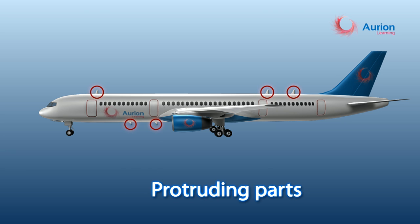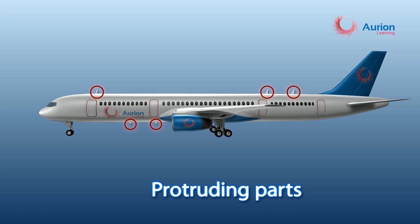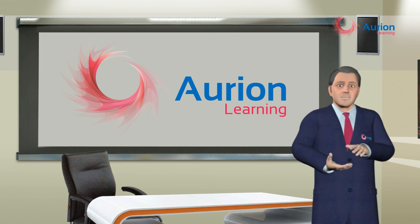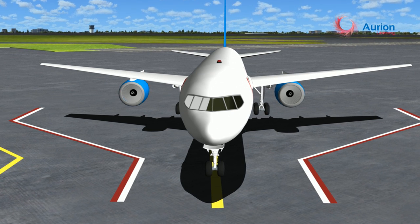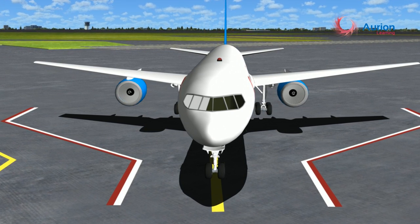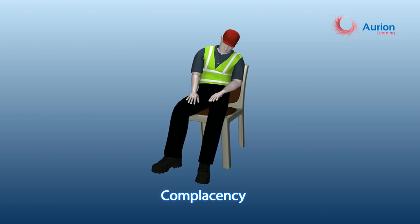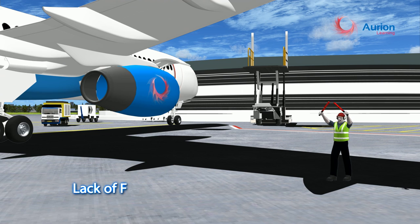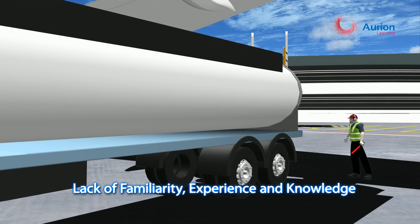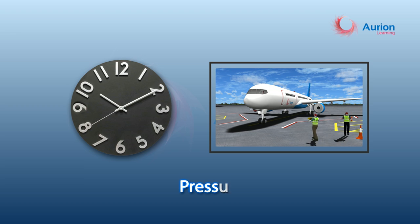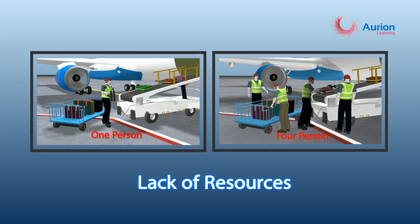All protruding parts of an aircraft can present a safety hazard and cause serious injuries — you must be very cautious when around dangerous areas in the vicinity of the aircraft. There are several non-aircraft hazards on the ramp that could lead to accidents on airside. These include complacency, distractions, lack of awareness, lack of familiarity, lack of experience and knowledge, ignorance, pressure, lack of resources, and lack of teamwork.